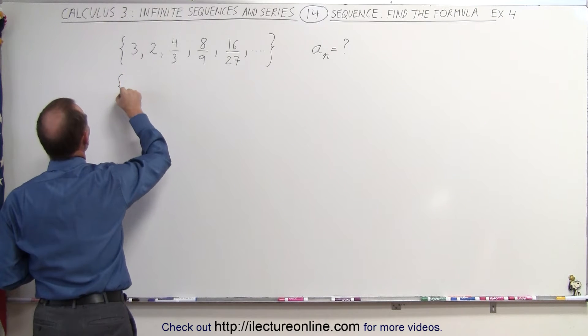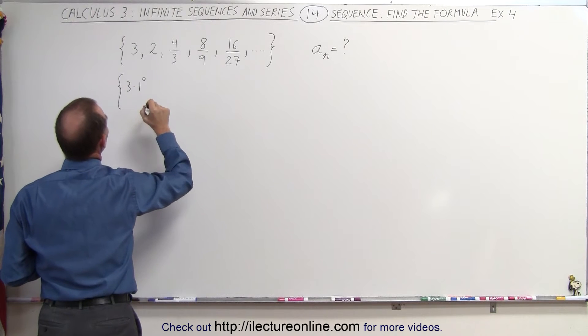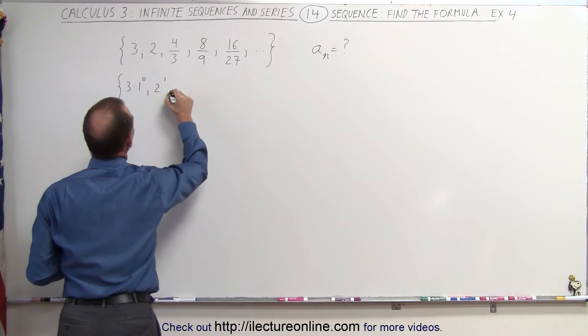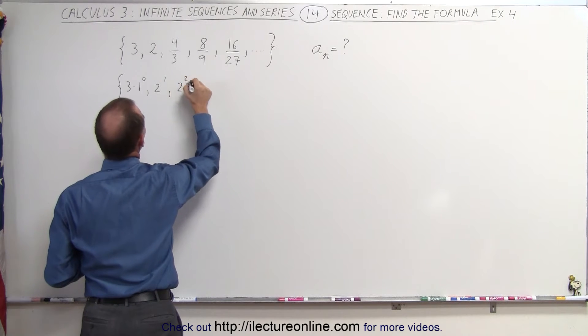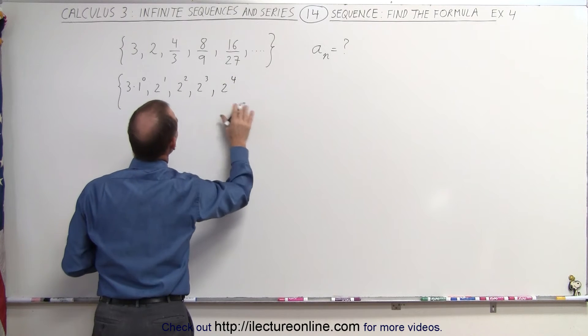So this could be also written as 3 times 1 to the zero power. And then this would be 2 to the first power, and then 2 to the second power, and 2 to the third power, 2 to the fourth power in the numerator.